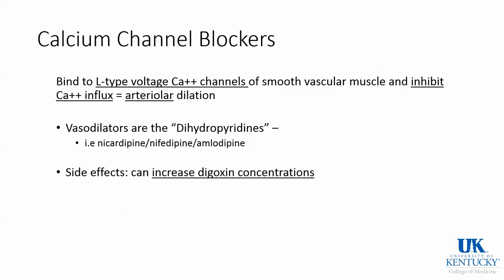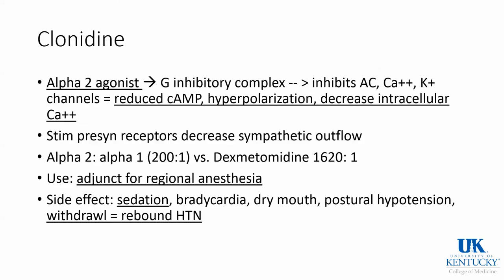Calcium channel blockers bind to the L-type voltage channels and inhibit calcium influx. These are the common ones we see in the ORs. Clonidine is an alpha-2 agonist that causes a reduction in cyclic AMP, hyperpolarization, and a decrease in intracellular calcium, thereby decreasing blood pressure. It is not as specific for alpha-2s as dexmedetomidine. It can be used as an adjunct for regional anesthesia and has some sedation properties. In withdrawal, you can get severe rebound hypertension.